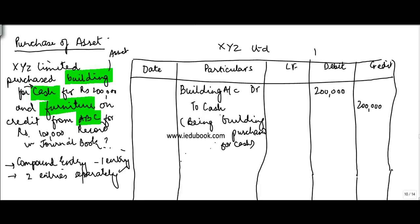The second transaction is you're buying furniture on credit. So what is furniture? Furniture is again an asset. When you buy furniture, furniture comes in, which means that the furniture is increasing. Increase in an asset is debited, so you write furniture is debited.